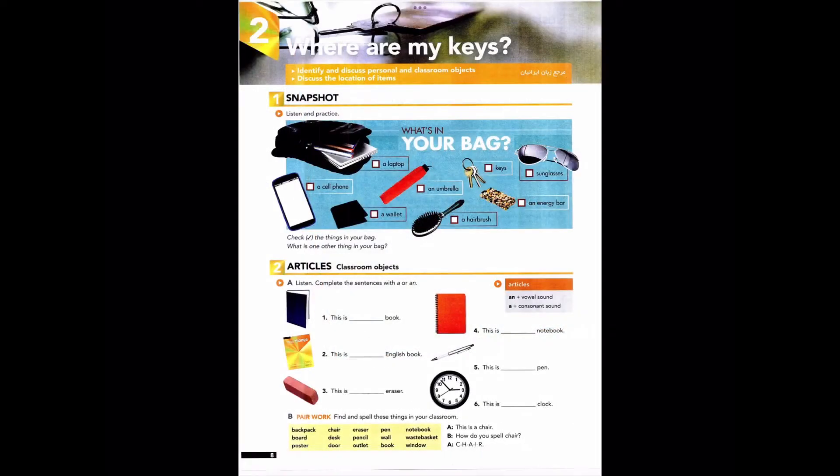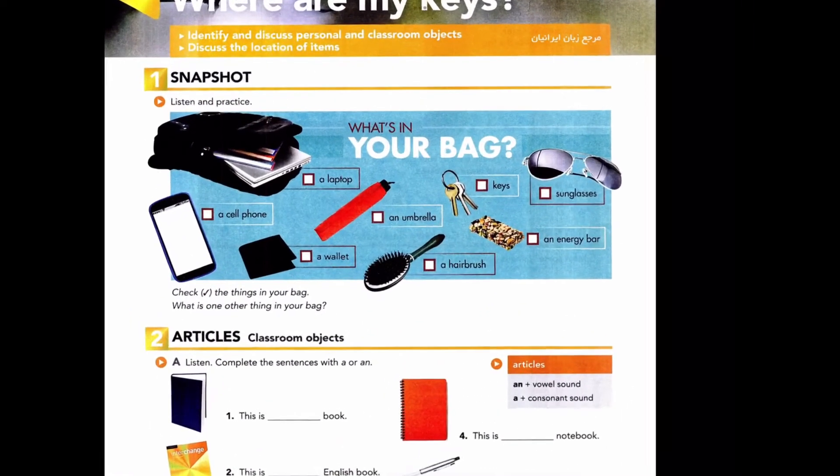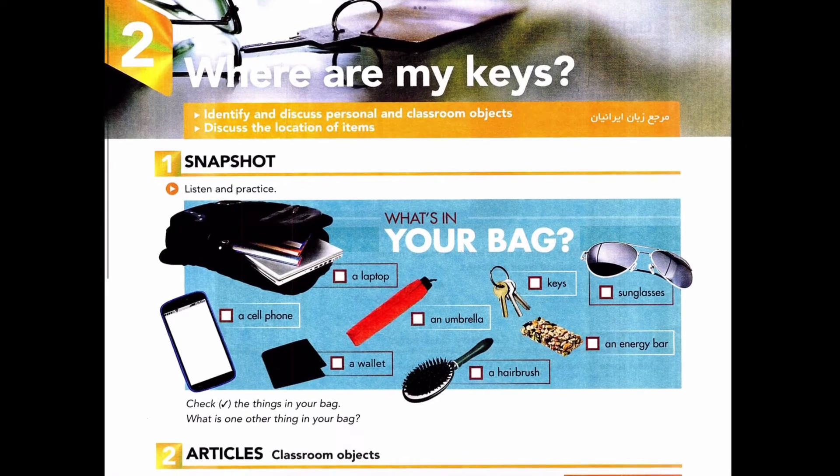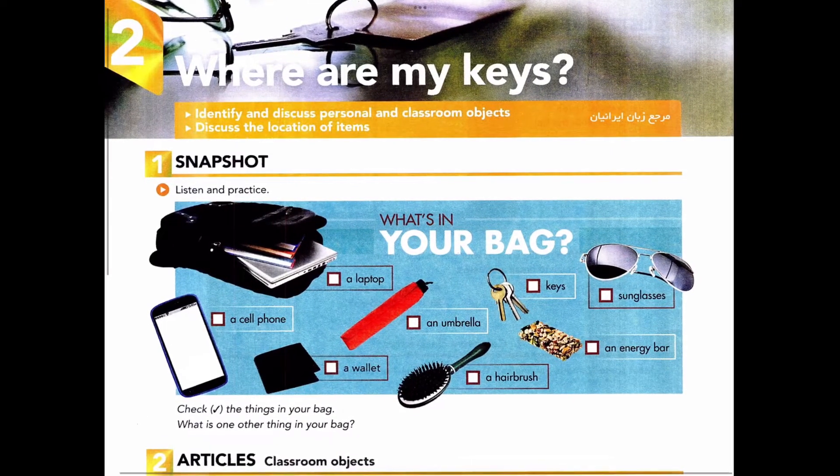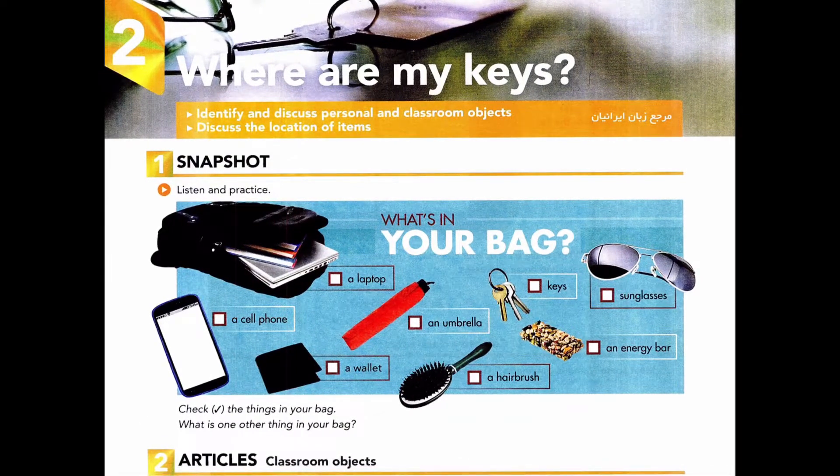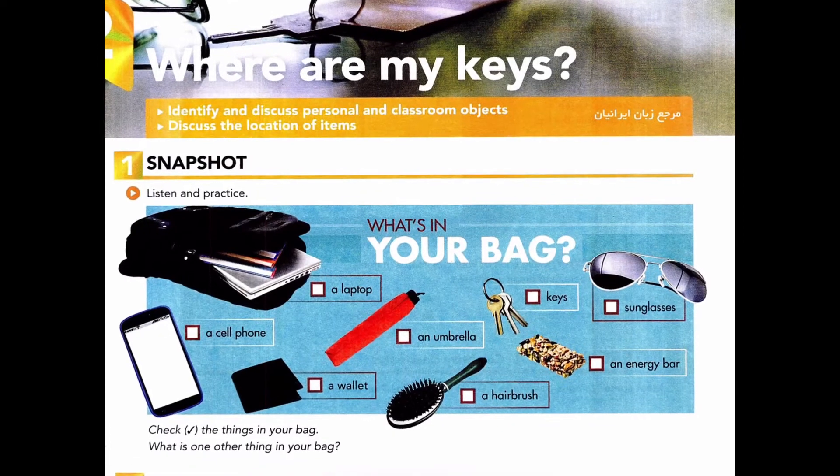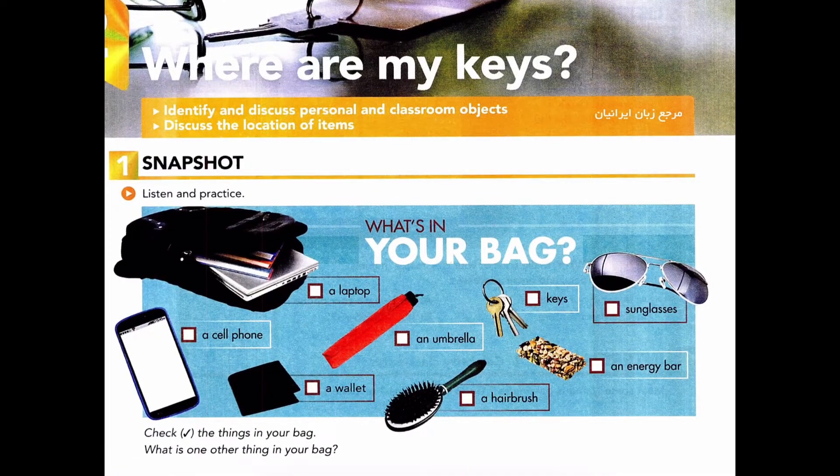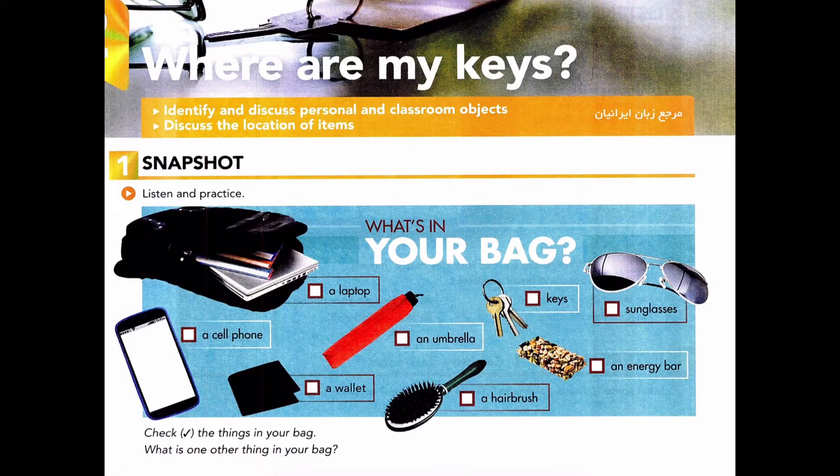Unit 2: Where are my keys? Page 8, Exercise 1, Snapshot: What's in your bag? Listen and practice. A laptop, a cell phone, a wallet, an umbrella, a hairbrush, keys, sunglasses, an energy bar.